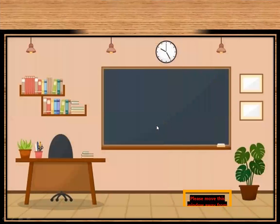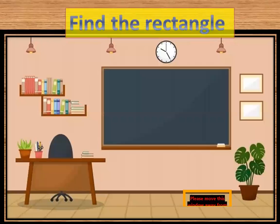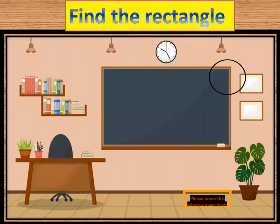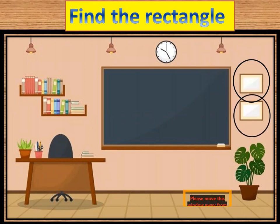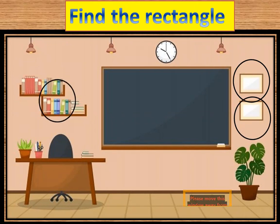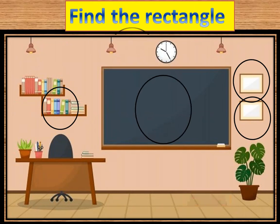Let's find the rectangle here in the picture. Very good — the photo frames and the books have a rectangular shape, the board, and the ruler. Well done!